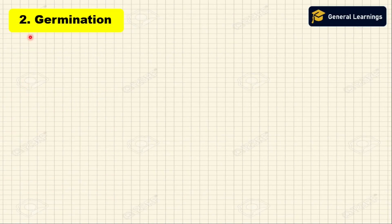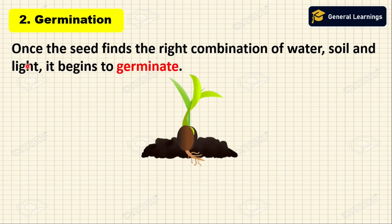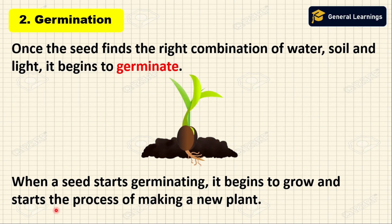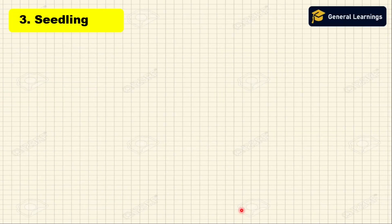The next stage is germination. Once the seed finds the right combination of water, soil, and light, it begins to germinate. When a seed starts germinating, it begins to grow and starts the process of making a new plant.